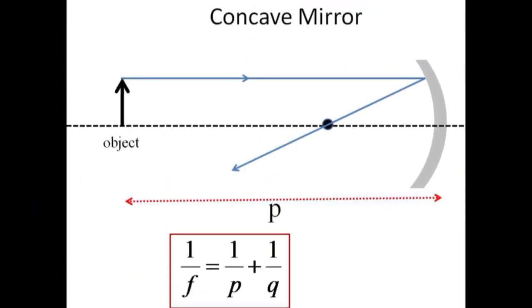A concave mirror will bring rays to a focus as will a converging lens. P is the distance from the object to the mirror.